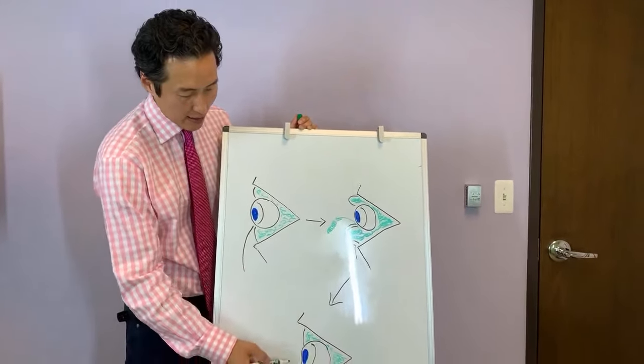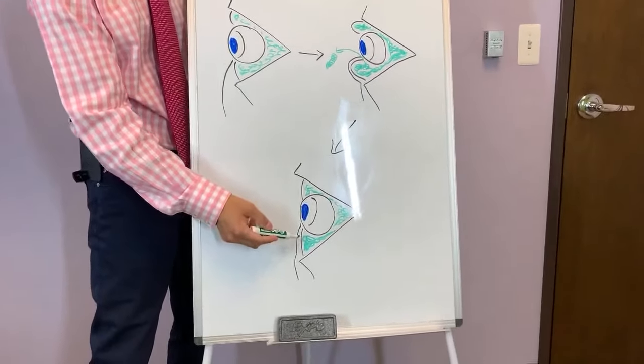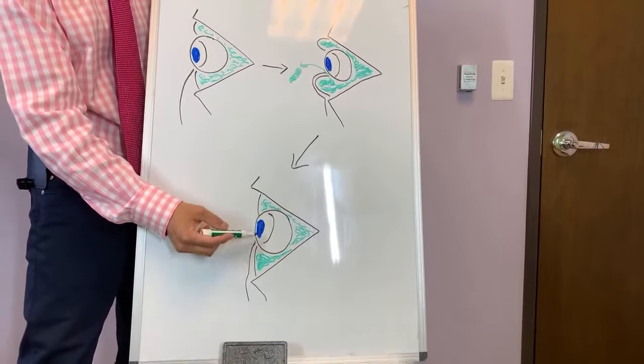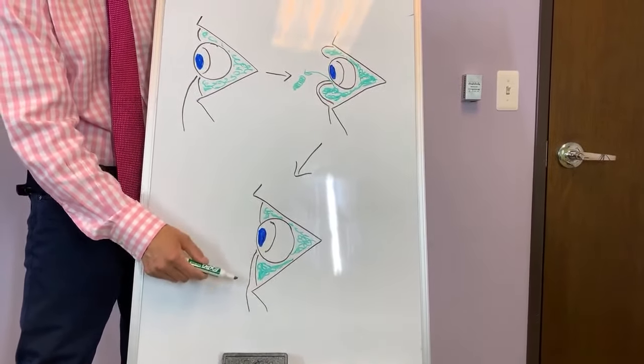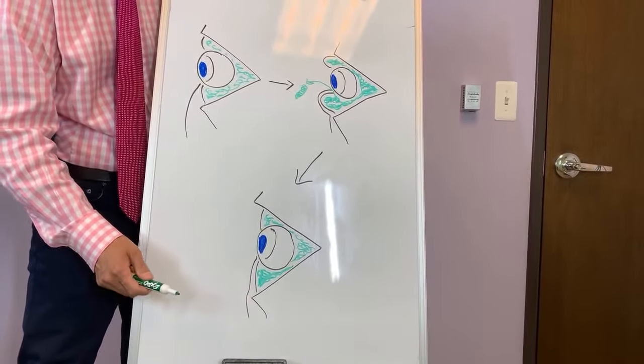And then what you get is something more like this, where the fat has been reduced, the septum is no longer bulging out, and you don't have that puffiness, that bag under the eye.